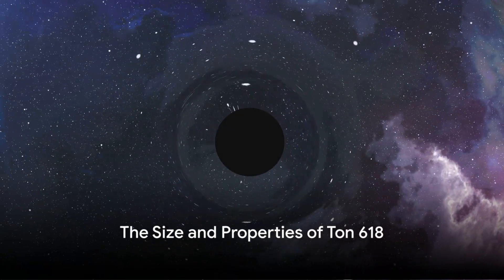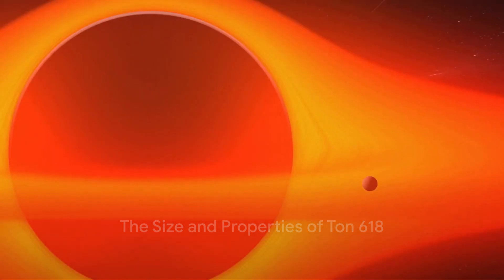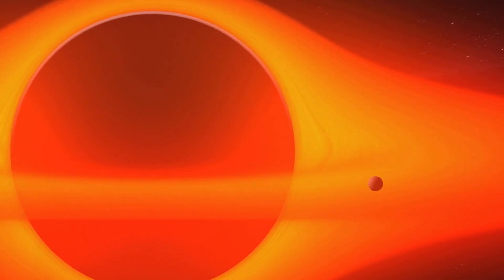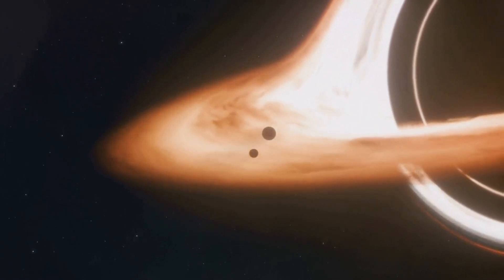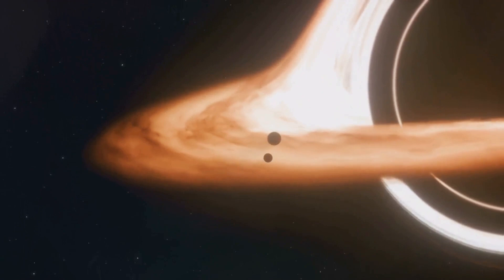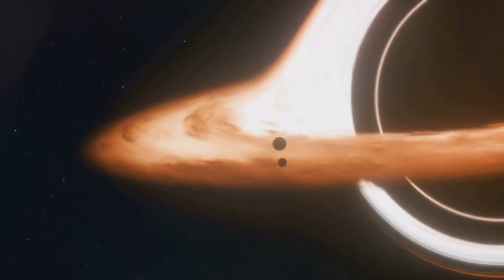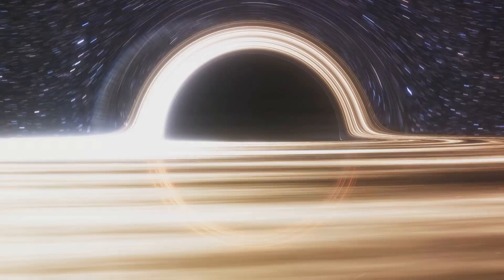Just how big is TON 618? To give you an idea, let's start with this simple fact. TON 618 is absolutely enormous. It dwarfs our solar system to the extent that it makes it seem like a mere speck of dust. Picture this, if our solar system was a coin, TON 618 would be as vast as a city. It's estimated that this black hole has a diameter of about 200 billion kilometers. That's 20 times the size of our solar system.